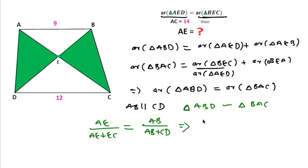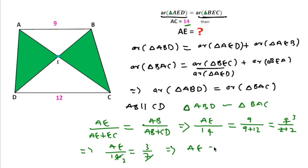AE plus EC is the length of AC, which is 14 units. AB is 9, and AB plus CD is 9 plus 12, which equals 21. So AE over 14 equals 3 over 7. Simplifying, we get AE equals 6 units.